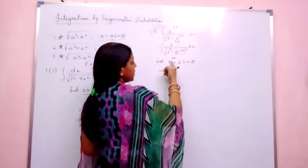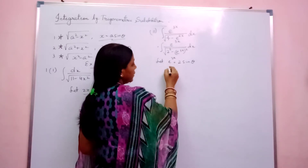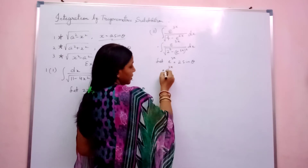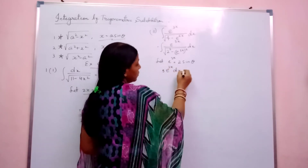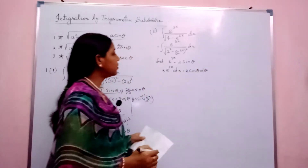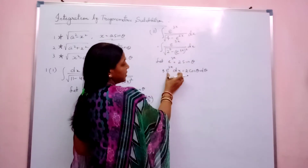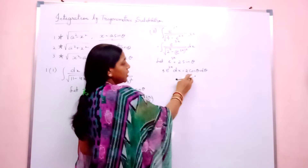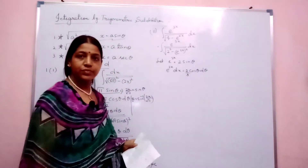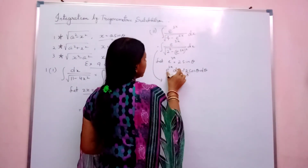Now let us differentiate. Differentiation of e to the power 3x is e to the power 3x, then apply chain rule: 3x gives 3 dx, equal to 2 cos theta d theta. Now in the numerator, e to the power 3x dx — take this 3 and divide to the other side, so what you will get is 2 by 3.